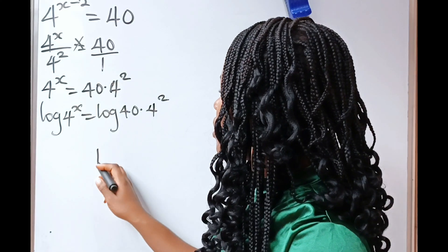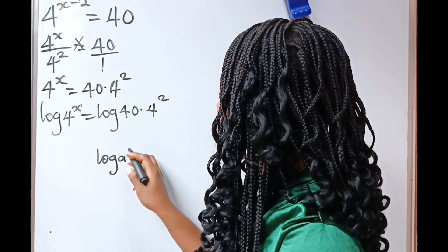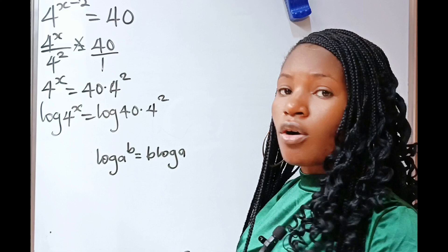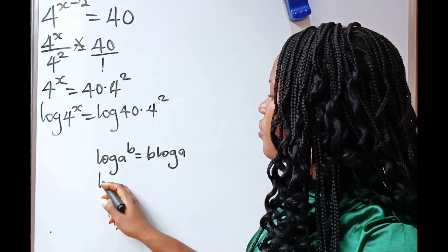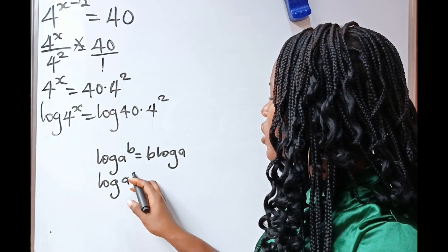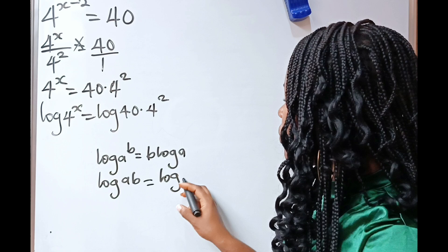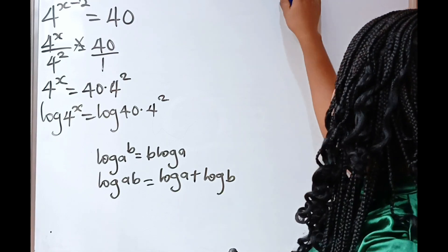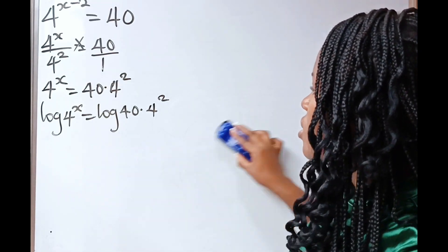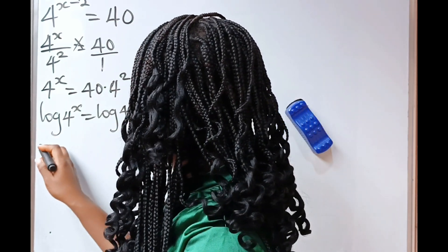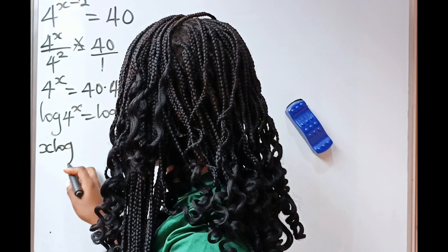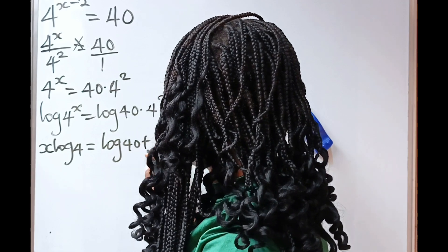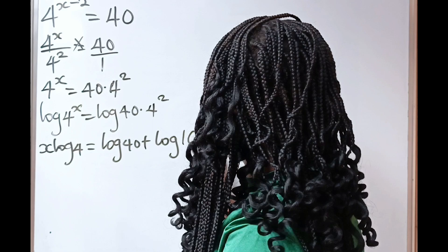Now, when you have log a to the power of b, it's equal to b multiplied by log a. And also, when you have log of a multiplied by b, it's equal to log a plus log b. So, that simply means that we can write this as x multiplied by log 4 is equal to log 40 plus log 4 squared.